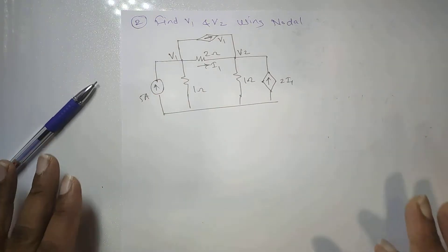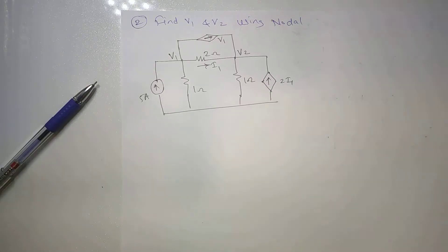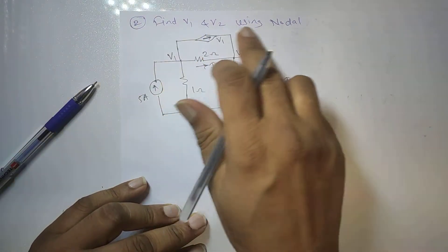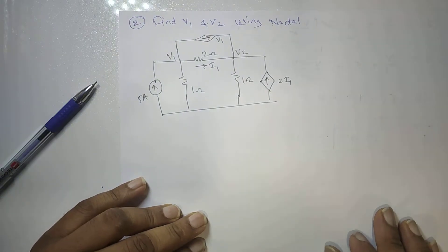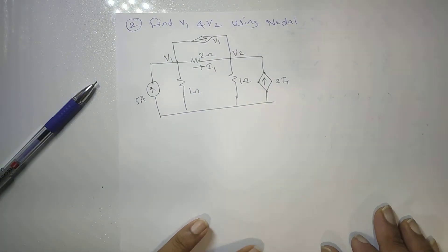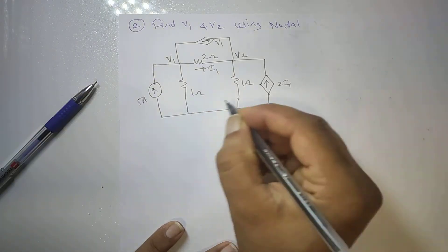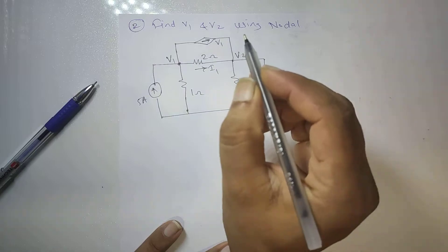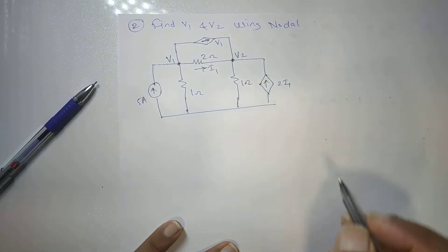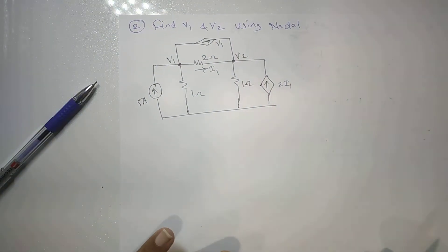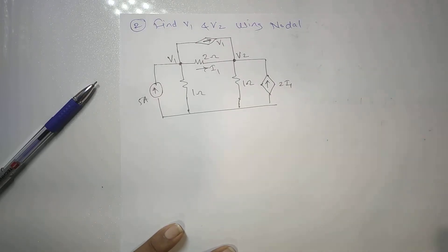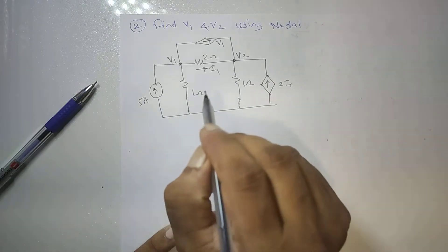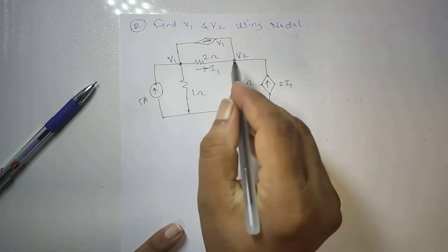Hello everyone. Last time we saw one problem based on nodal analysis. Now let us see the second problem: find V1 and V2 using nodal analysis. This problem consists of two active nodes — this is one node and this will be another node. First of all we have to identify the nodes. There are two nodes: V1 and V2, and they are already defined in the problem.